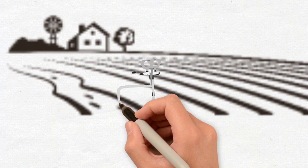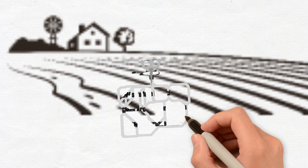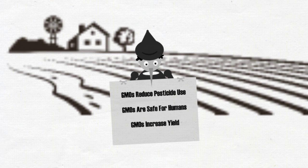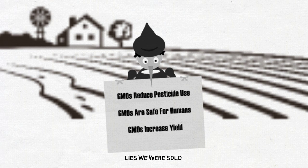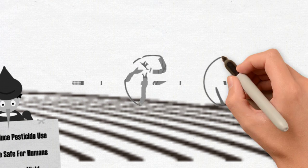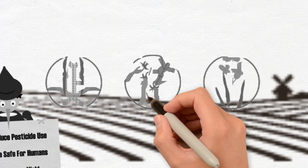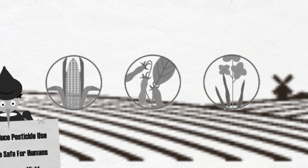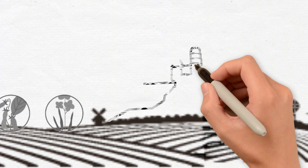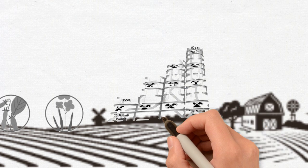Most GMO crops were engineered to withstand the presence of toxic pesticides. This technology was sold to the public based on the lie that this would decrease pesticide use, but the opposite is proven true. On the three biggest GE crops, glyphosate use increased from 15 million pounds in 1996 to 159 million pounds in 2012.